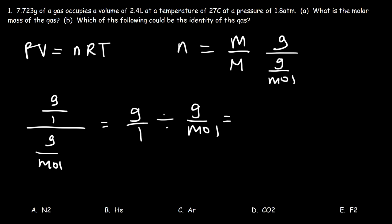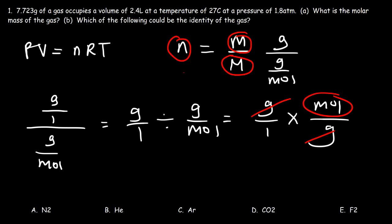Perhaps you heard of the expression keep change flip. Keep the first fraction the same, change division to multiplication, and flip the second fraction. So notice that the unit grams cancel giving you moles. So mass divided by the molar mass is equal to the moles.